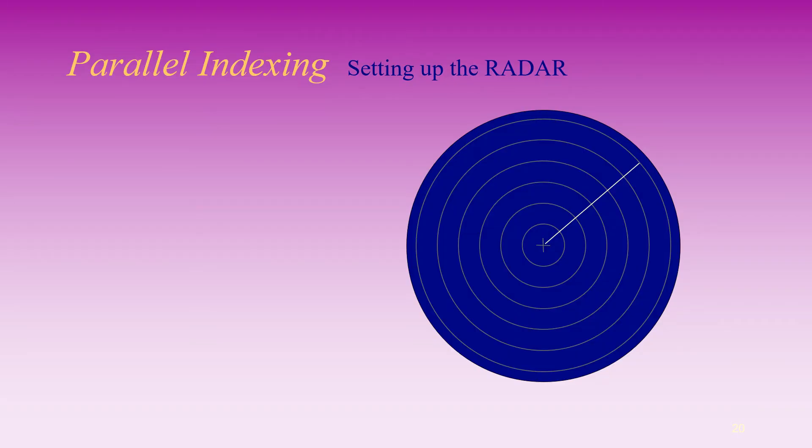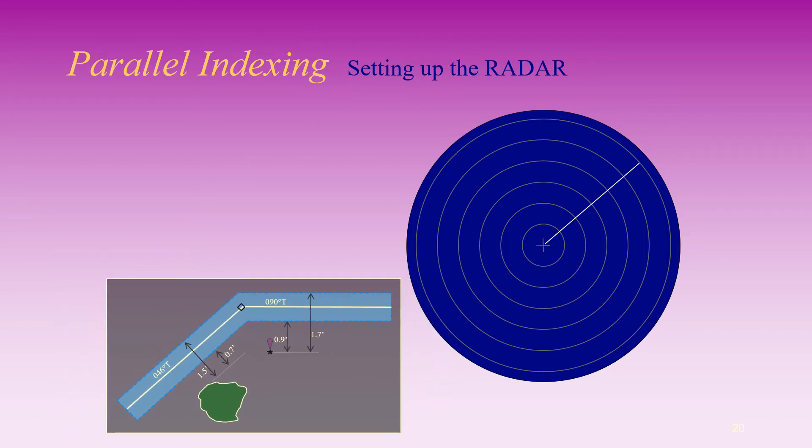Let's set up the radar now. Set up two index lines for the first leg: 046 degrees true at 0.7 nautical miles and 1.5 nautical miles away respectively.